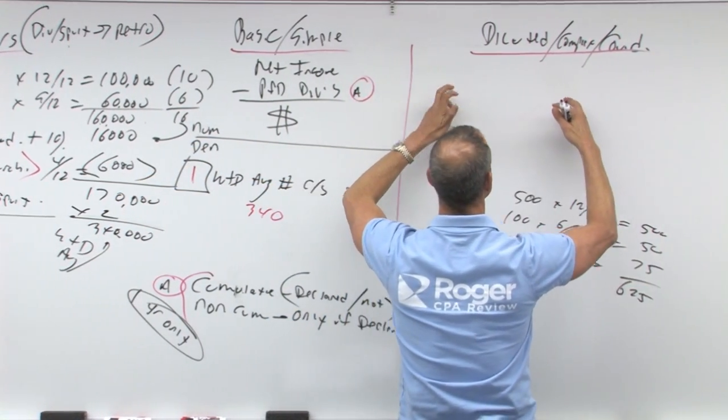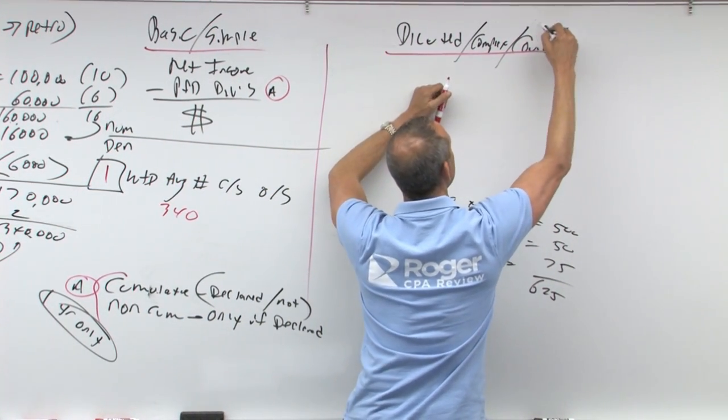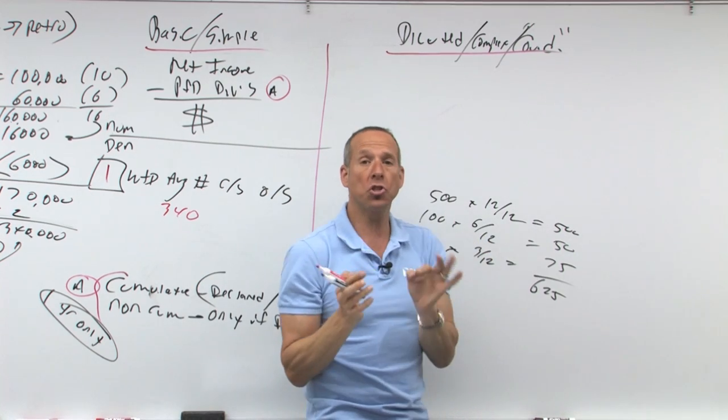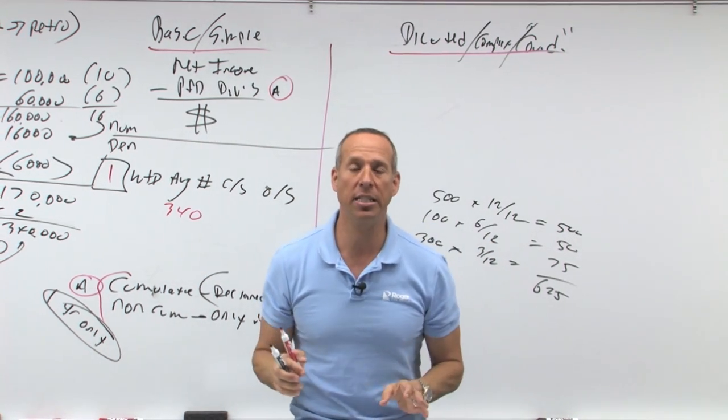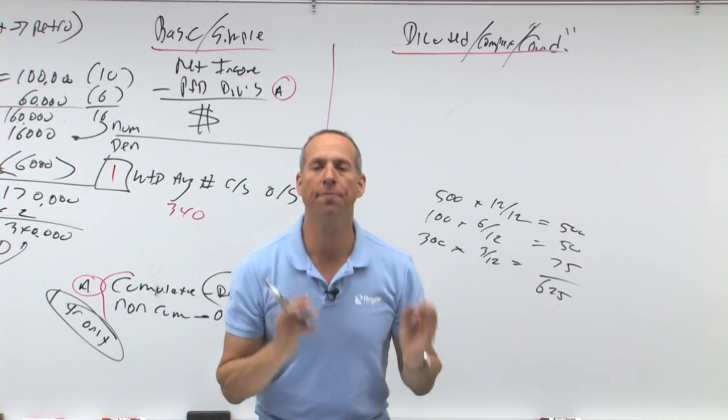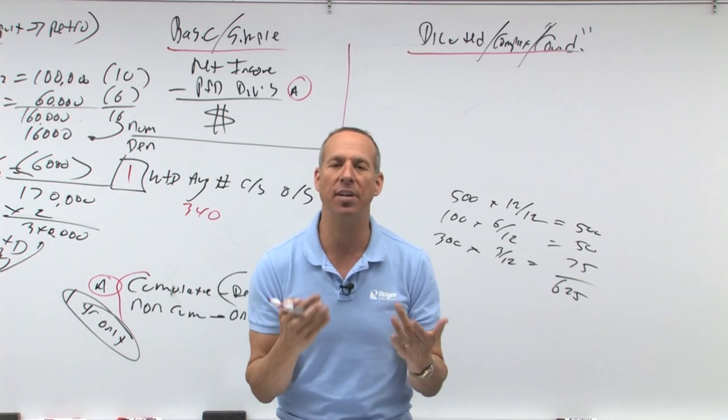Here in a complex capital structure, it's anyone who could convert, we assume they do so. It doesn't mean they actually did, but it says anyone who could convert and it's economically advantageous.